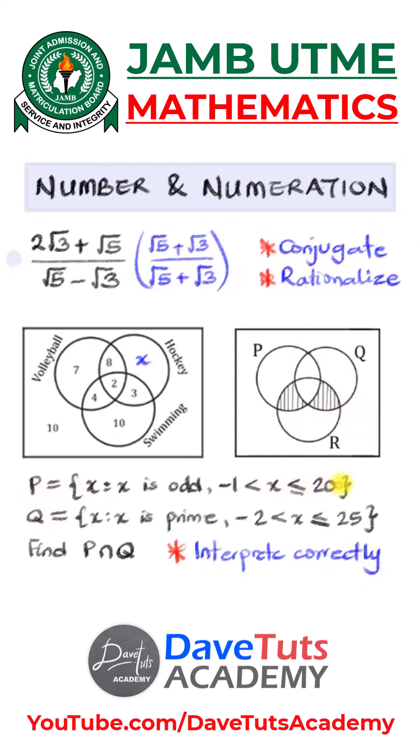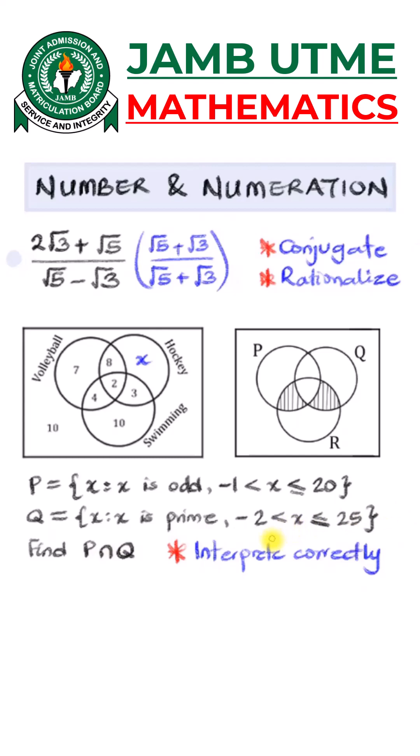Now, sometimes JAMB define your sets linearly with expressions like this, in which you need to interpret this, that P is defined in X such that X is odd and then minus 1 is less than X, which is less than or equal to 20. Now, minus 1 being less than X means that minus 1 is not part of it. And if you are saying it is odd, then you need to pick the odd numbers from 0 to 20 in this particular expression. So you need to be able to find how to interpret that correctly. And then look at this. They also gave you that Q is prime and Q is between minus 2 and 25, 25 inclusive. Then you should be able to get those elements in Q and in P out. Then you can find the intersection as appropriate. So those are the topics that are featured under number and numeration.